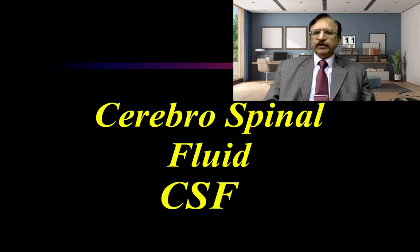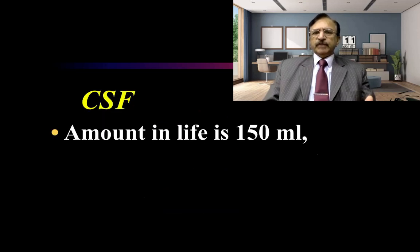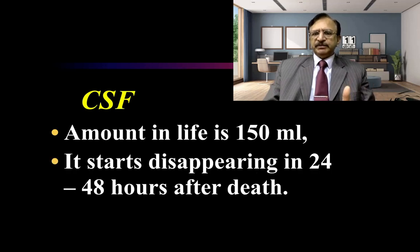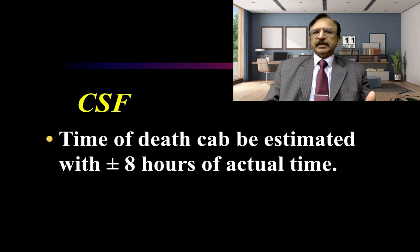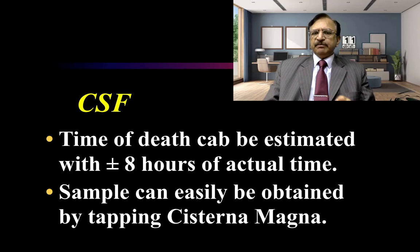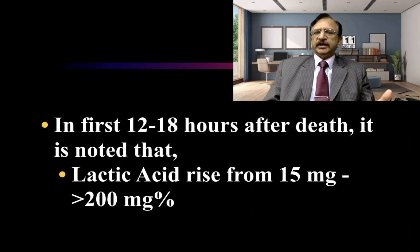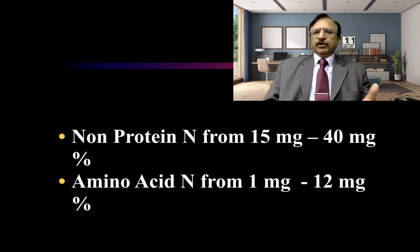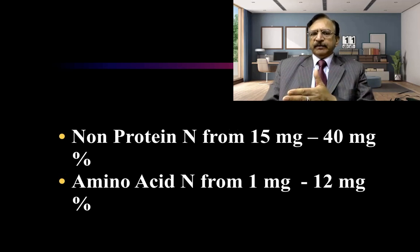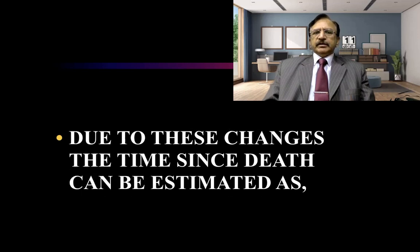Regarding cerebrospinal fluid or CSF: the normal amount is approximately 150 ml and it starts disappearing in 24 to 48 hours after death. Time of death can be estimated with plus or minus 8 hours of actual time. Samples can easily be obtained by tapping the cisterna magna. In the first 12 to 18 hours after death, lactic acid rises from 50 mg to more than 200 mg per deciliter, non-protein nitrogen rises from 15 mg to 40 mg, and amino acid nitrogen from 1 mg to 12 mg. Due to these changes, the time since death can be estimated.